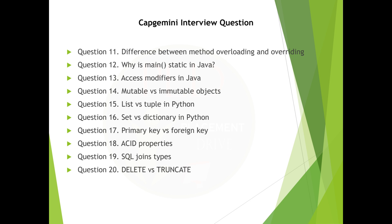Question 15: List vs. tuple in Python. Question 16: Set vs. dictionary in Python. Question 17: Primary key vs. foreign key. Question 18: ACID properties. Question 19: SQL join types. Question 20: Delete vs. truncate.